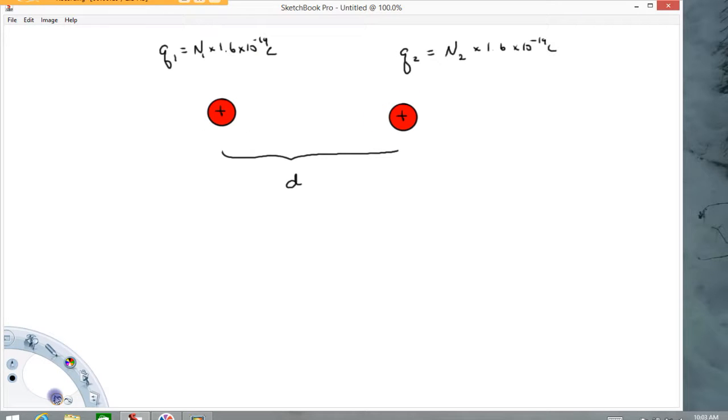We're going to assume in this example that these are point charges. Now, what does a point charge mean? Well, it means that basically all the charge can be considered to be either at one point in space or at least very, very close to one point in space.